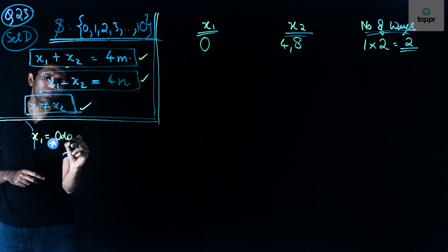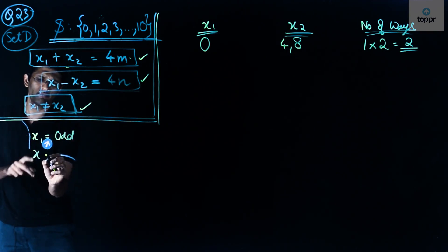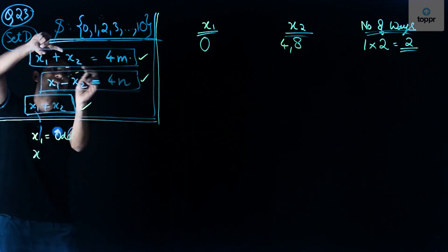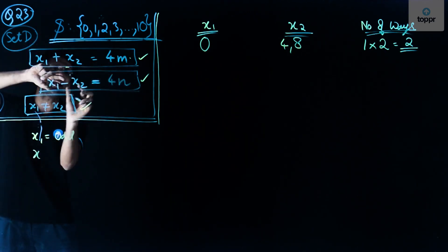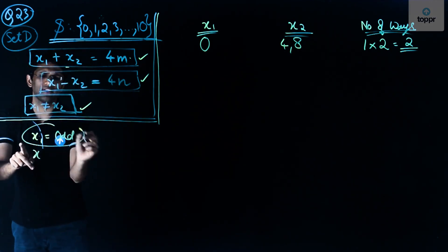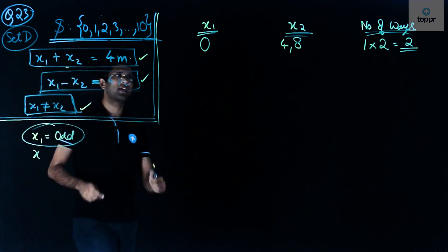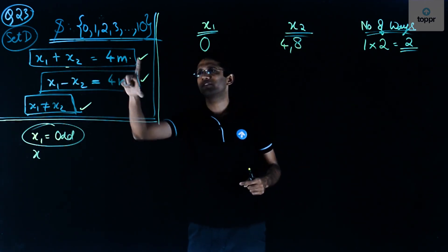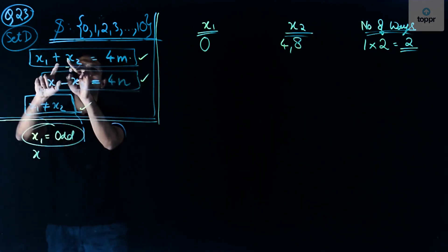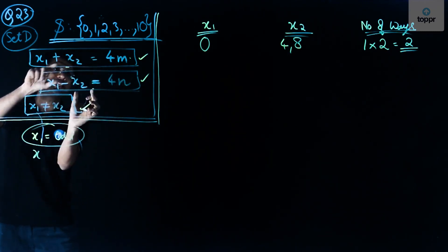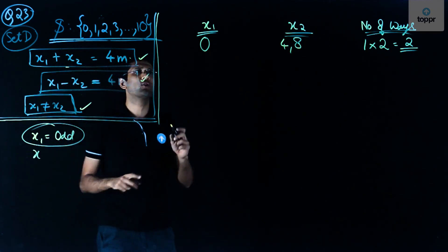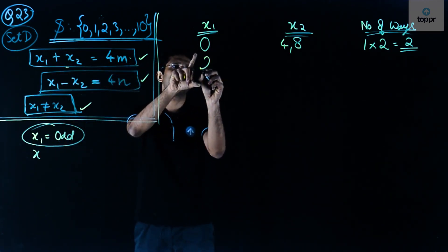If x1 is odd, we cannot find an x2 such that x1 + x2 is a multiple of 4 and x1 - x2 is also a multiple of 4. For all odd numbers, x1 + x2 and x1 - x2 will not simultaneously be multiples of 4. So we discount all odd cases and move to the next value, x1 = 2.